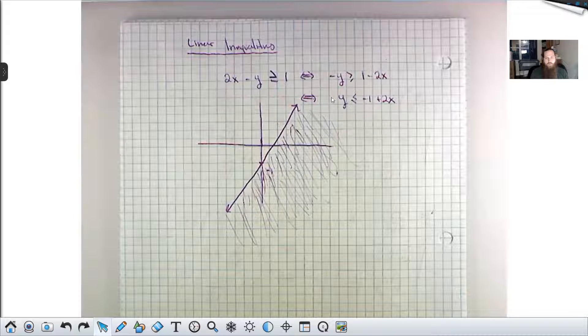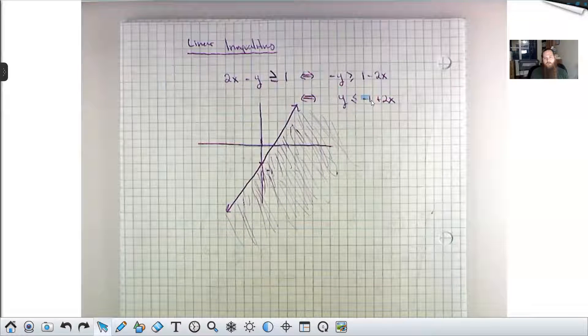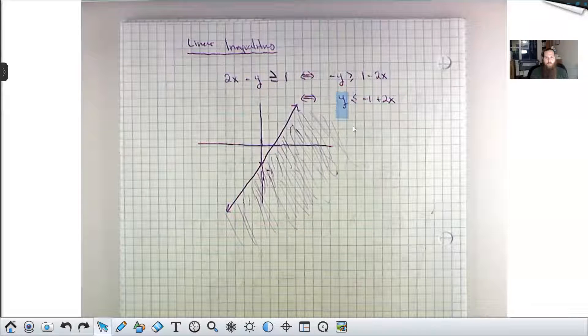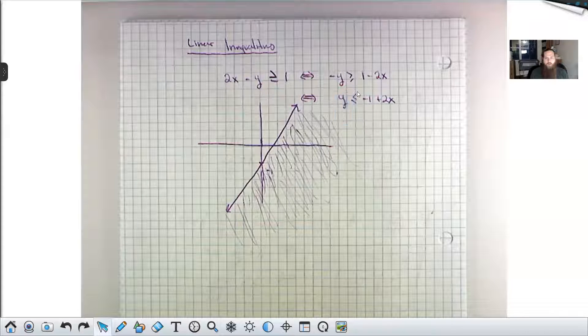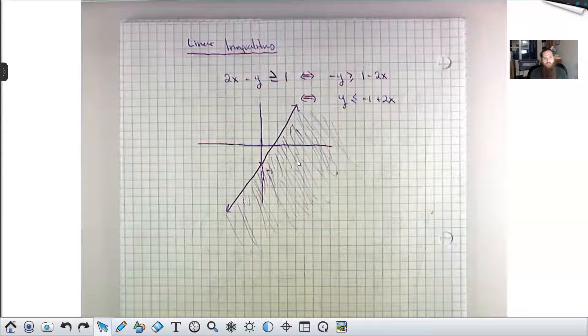After dividing by negative 1, the greater than or equal to flipped to a less than or equal to. So we've got y is less than or equal to negative 1 plus 2x. The idea is that that's all the points whose y value is lower than this line.